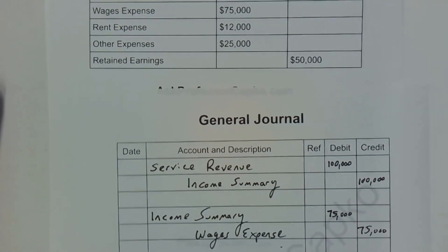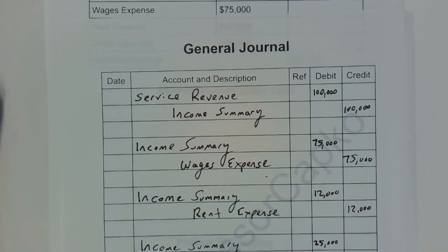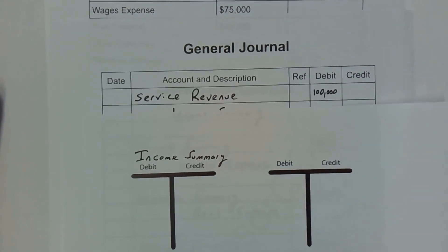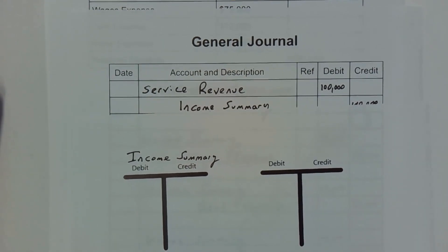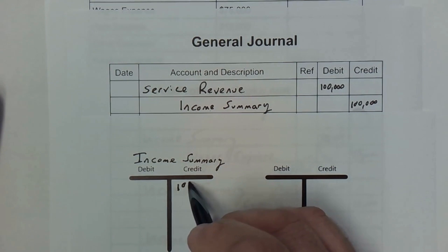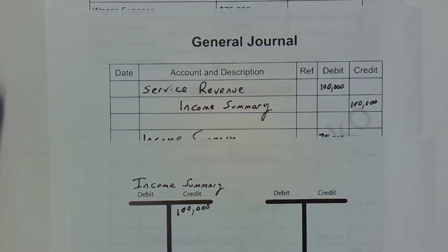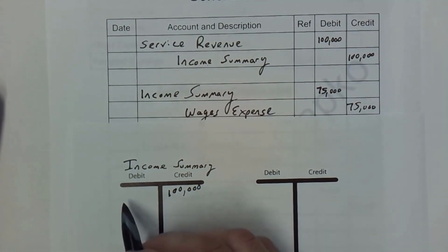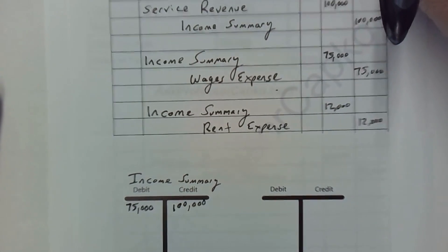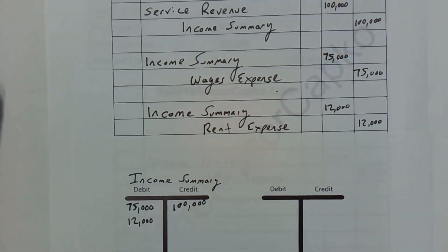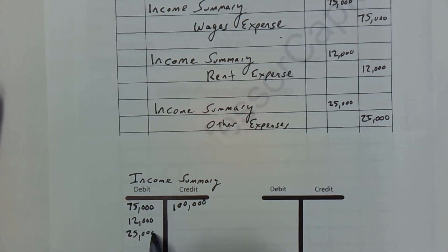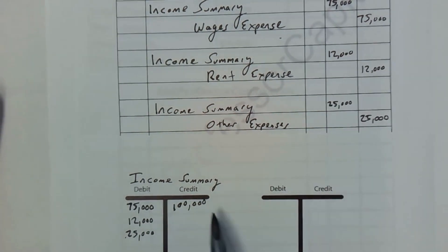That closed out that account. I like to look at these with T-accounts so we have a good idea of how this works. I've created a T-account called income summary and let's go through all the transactions. The first one: we credit income summary for a hundred thousand. Our next transaction, we debit income summary for seventy-five thousand. Income summary gets debited again for twelve thousand. And when we close out other expenses, we debit income summary for twenty-five thousand. I'm simply transferring these debits and credits into the T-account.